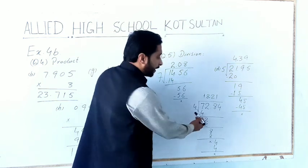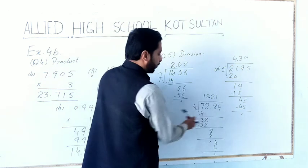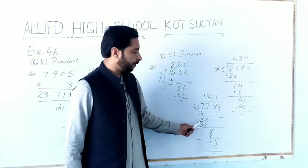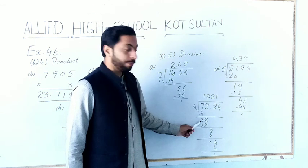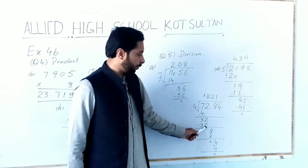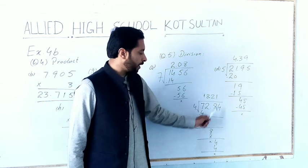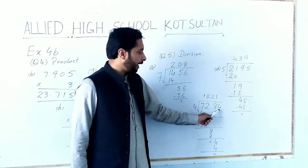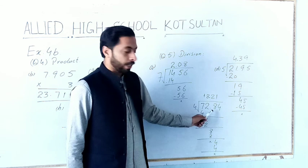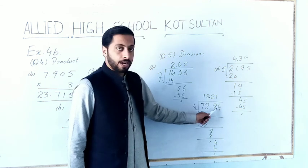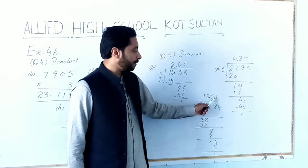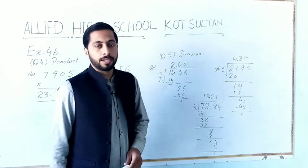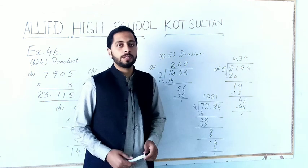The next part is 72.84 divided by 4. 4 × 1 = 4, 7 − 4 = 3. Bring down 2 to get 32. 4 × 8 = 32. Bring down 8: 4 × 2 = 8. Bring down 4: 4 × 1 = 4. The decimal point is after two digits, so we place the decimal in the answer after two digits and the answer will become 18.21. All remaining parts should be solved in the same way.